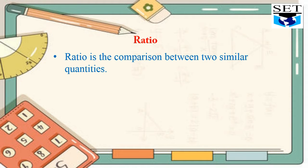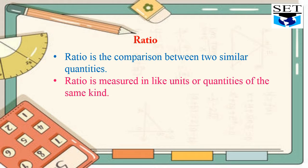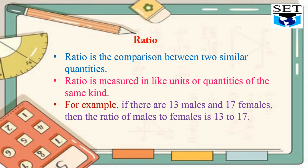What is ratio? Ratio is the comparison between two similar quantities. Ratio is measured in like units or quantities of the same kind. For example, if there are 13 males and 17 females, then the ratio of males to females is 13 to 17.